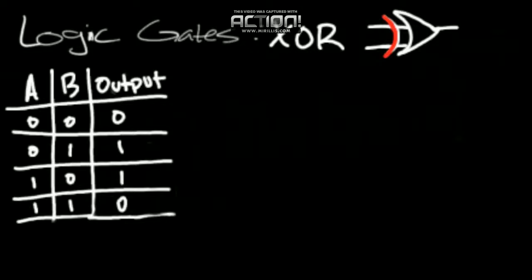So it diverges from the OR gate. It's very similar, but an OR gate, at least one can be true. Whereas the XOR gate, one has to be true. So let's look at the truth table, and hopefully it'll make things a lot clearer.